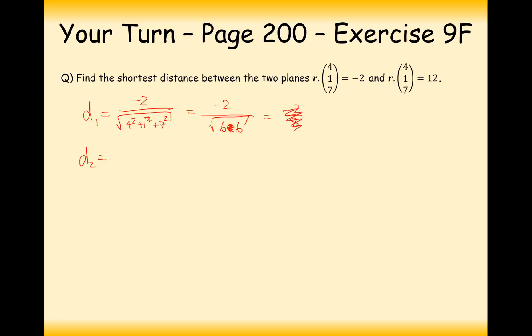It doesn't quite work out that nicely. So -2/√66, and then d₂ is going to be 12 over 4² plus 1² plus 7². So that's going to be 12/√66.